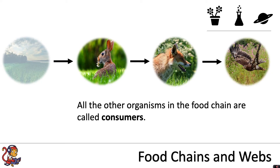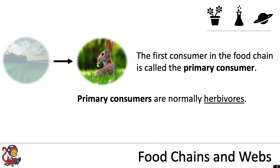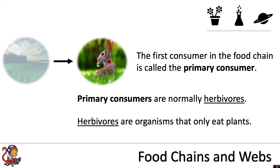All the other organisms in the food chain are called consumers. The first consumer in the food chain is called the primary consumer. Primary consumers are normally herbivores — organisms that only eat plants. They could also be an omnivore, which eats animals and plants, but often they are herbivores.